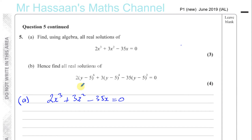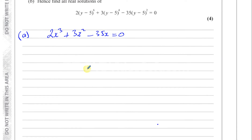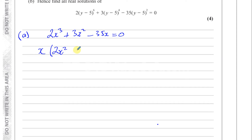This is a cubic equation, but in P1 we're not required to solve using any method other than factorizing. Cubic equations will always have a common factor of x in all the terms in P1, so we can take out that common factor. Since x appears in all three terms, we get x times (2x squared plus 3x minus 35) equals 0.